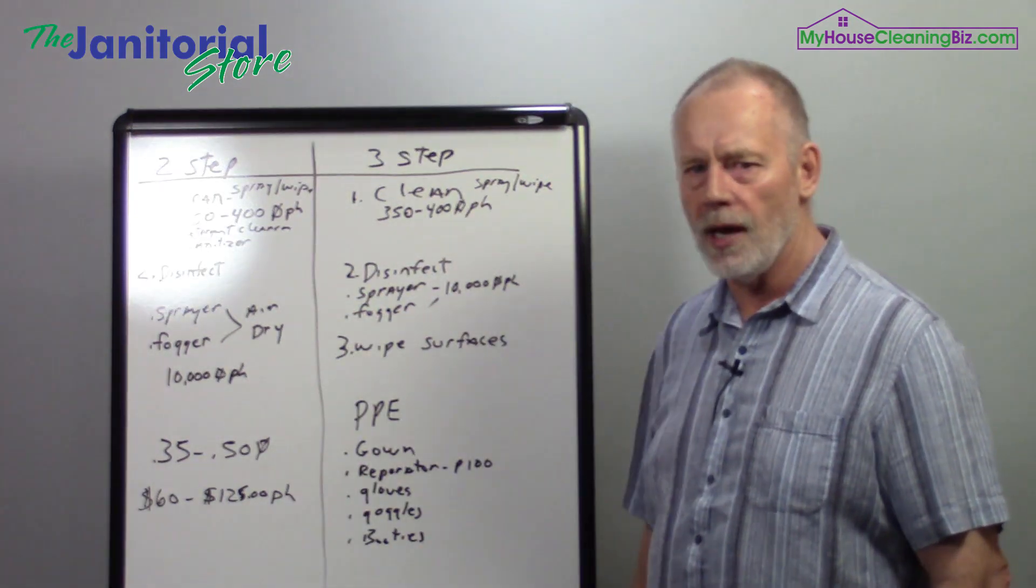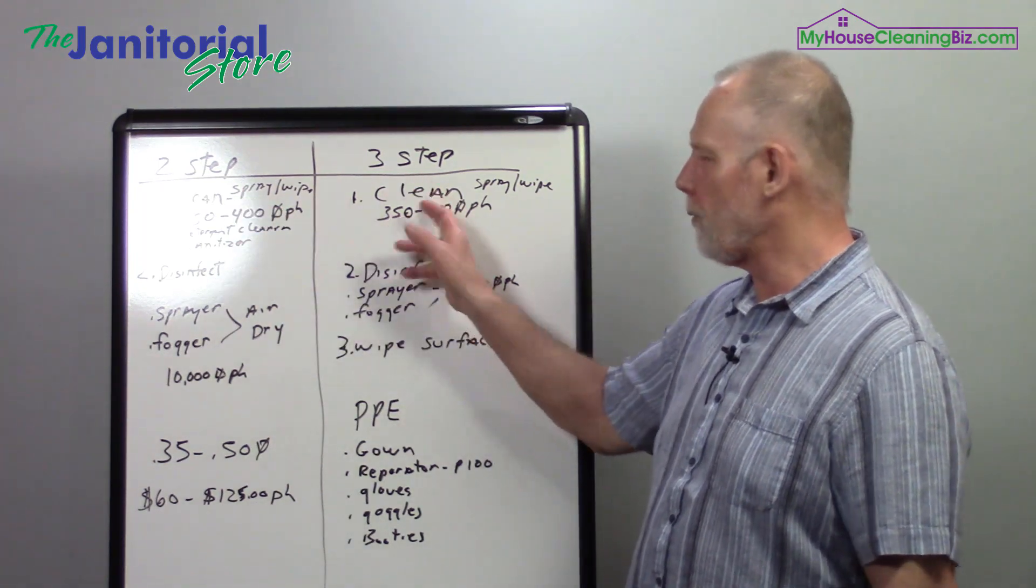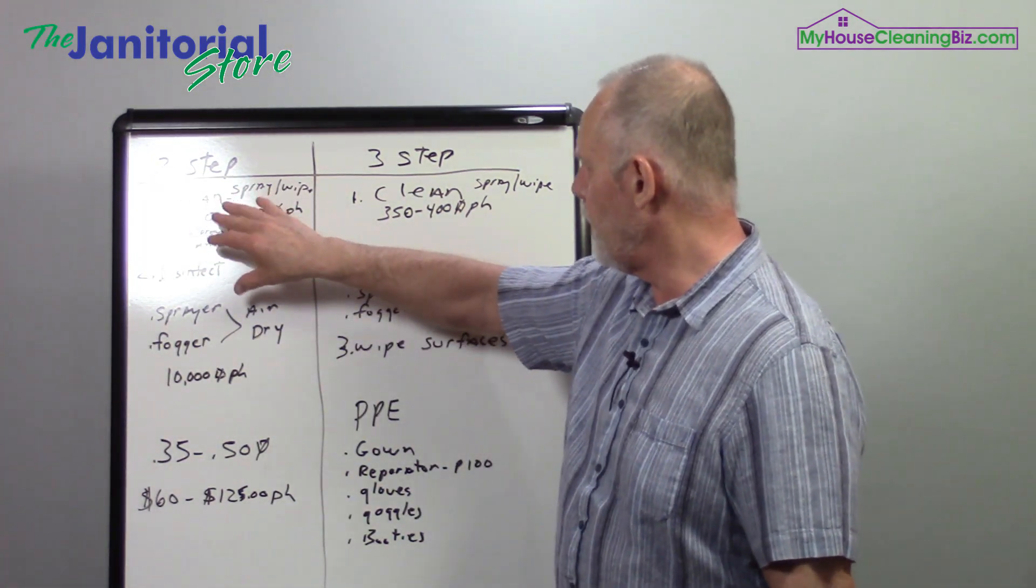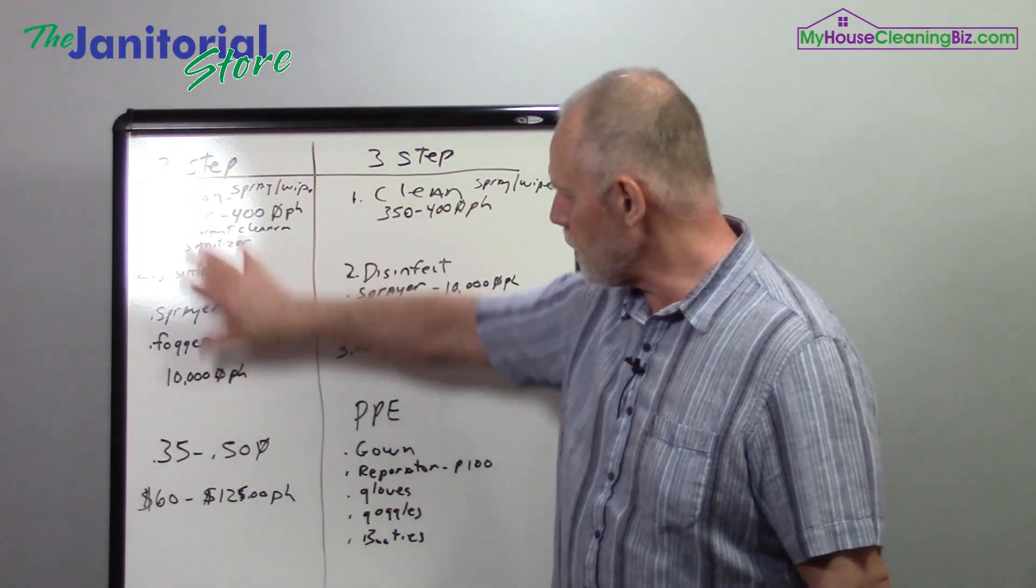So on the whiteboard here, what I have is a two-step process and a three-step process. You might not be able to see this, the light was probably shining on that and you got a glare, but that's a two-step process.